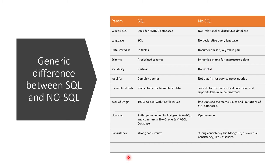Regarding scalability, in a relational database you scale vertically by adding more CPU, RAM, or storage to your system. With NoSQL you can scale horizontally by adding more nodes. SQL databases are better suited for complex queries, while non-relational databases are not good for complex queries because there are no joins. Non-relational databases are better suited for hierarchical data, while relational databases are not.